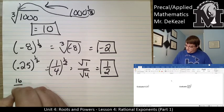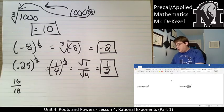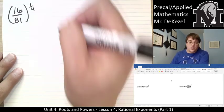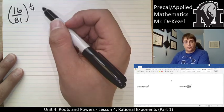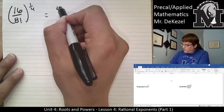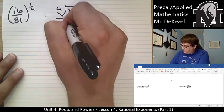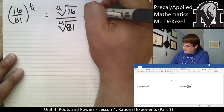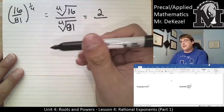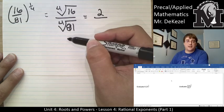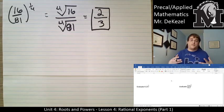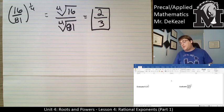We have 16 over 81 to the power of one quarter. When I see a quarter, I know I've got to do a fourth root of these numbers. We have the fourth root of 16 over the fourth root of 81. Two times two is four, times two is eight, times two is 16 — so two is the fourth root of 16. Three times three is nine, times three is 27, times three again is 81 — so our final answer is two thirds. Something that looks as complicated as 16 over 81 to the power of a quarter is actually just two thirds, and we didn't need a calculator.